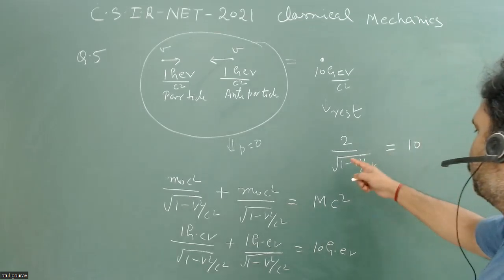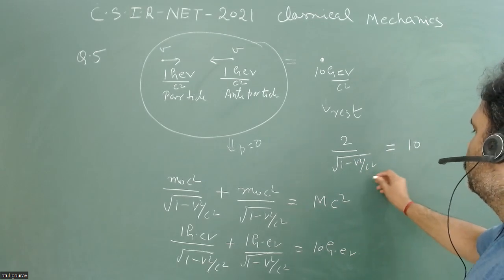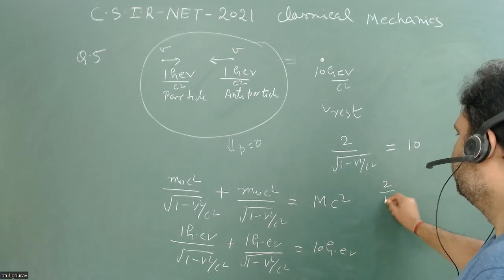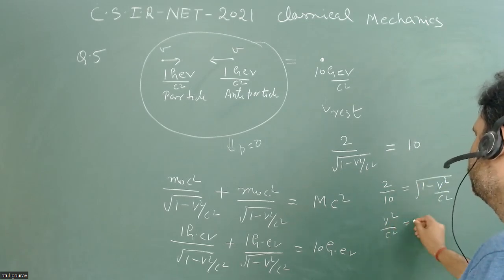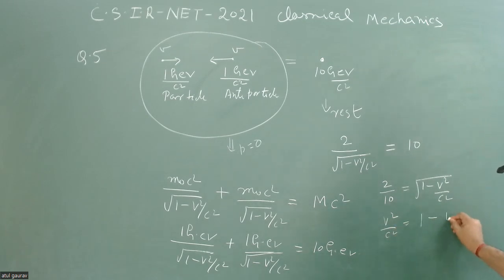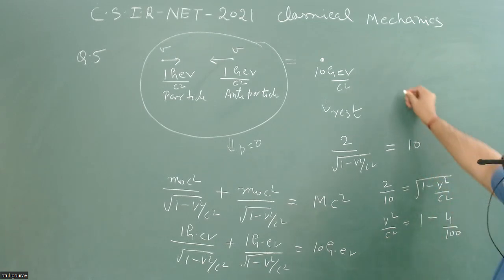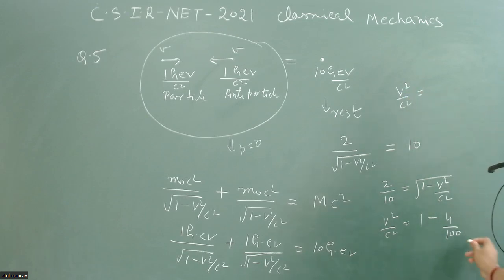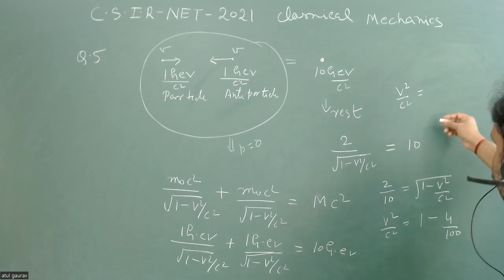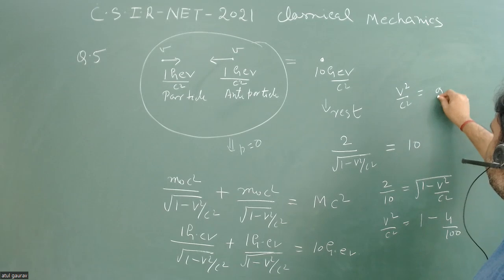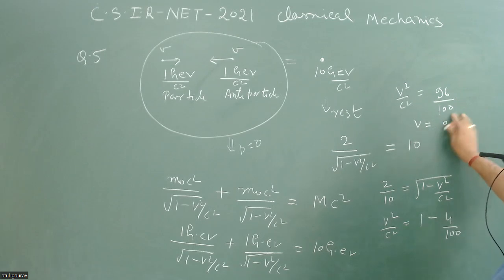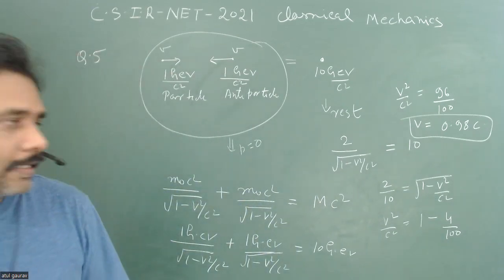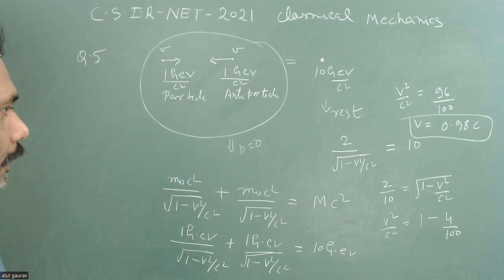From 2/10 = √(1 - v²/c²), we get v²/c² = 1 - 4/100, so v²/c² = 96/100. Therefore v is approximately 0.98c. This is the correct answer.